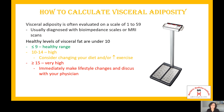How can you calculate your visceral adiposity? It is often measured on a scale of 1 to 59, called a visceral adiposity index. It's usually diagnosed with bioimpedance scales or MRI scans. A healthy level is 9 and under. A visceral fat score of 10 to 14 is considered high — you'll want to consider changing your diet and increasing your exercise. A score greater than 15 is considered very high, requiring immediate lifestyle changes including diet and exercise, and you should discuss this with your physician.